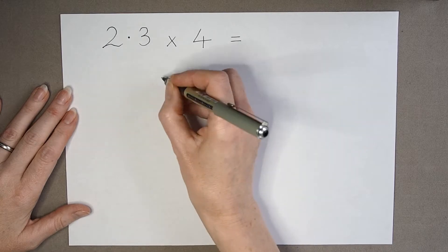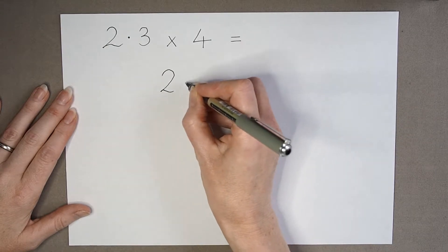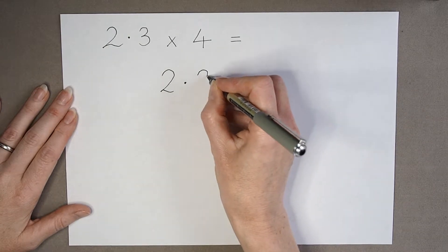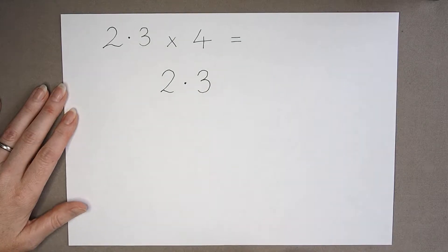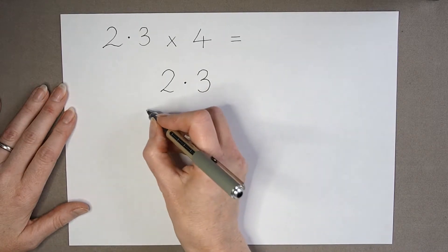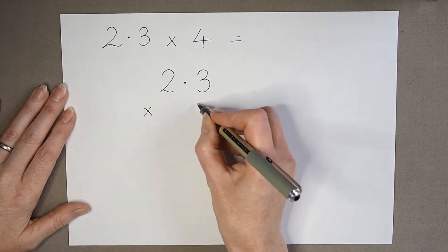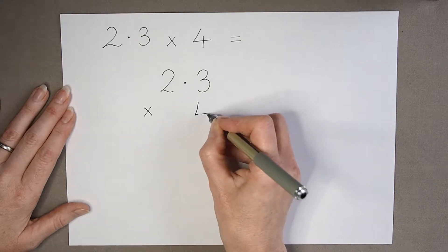2.3 multiplied by 4. I'm going to put the longer number, one with the more digits on the top, and multiplied by 4.